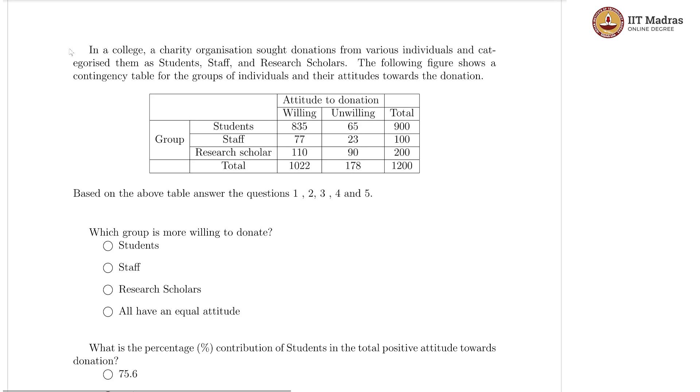This is our first question. In a college, a charity organization sought donations from various individuals and categorized them as students, staff, and research scholars. The following figure shows the contingency table for the groups of individuals and their attitudes towards the donations. There are two kinds of attitudes we are looking at: willing and unwilling, and we have the respective numbers for these.